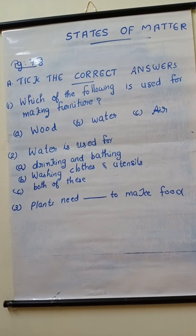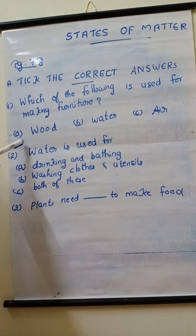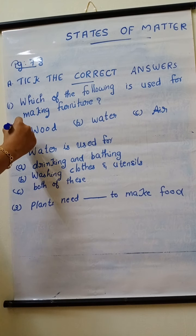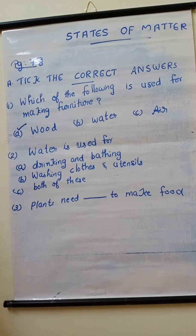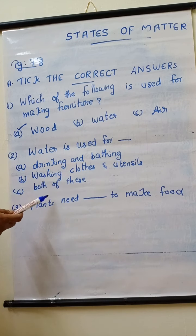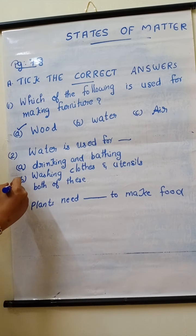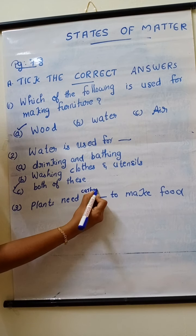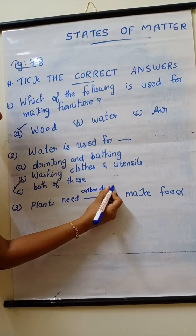Now let us solve the exercise formation which is given in page number 78. Exercise A, take the correct answers. First question, which of the following is used for making furniture? Among wood, water and air, wood is used for making furniture. Next, water is used for drinking, bathing, washing clothes and utensils — both of these, so we take that option. Next one, plants need dash to make food. Options are oxygen, nitrogen and carbon dioxide. We know that plants need carbon dioxide to make food.